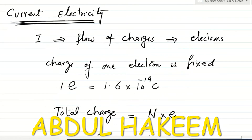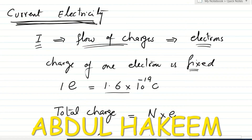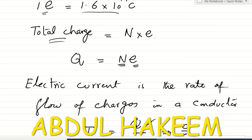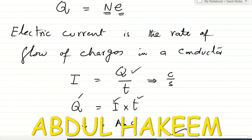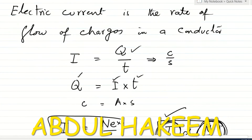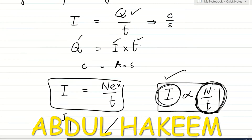The chapter is current electricity. Current I is due to the flow of charges, and the charge is carried by electrons. The charge of one electron is fixed, equal to 1.6 × 10⁻¹⁹ coulomb, represented by e (elementary charge). The total charge Q is equal to ne, where n is the number of electrons. Electric current is the rate of flow of charges in a conductor: I = Q/t, where Q is in coulombs and t is in seconds.